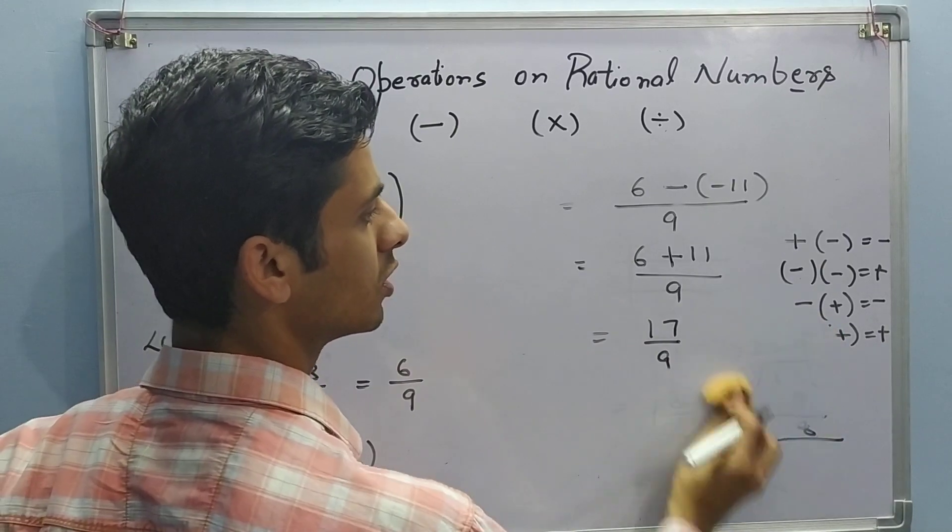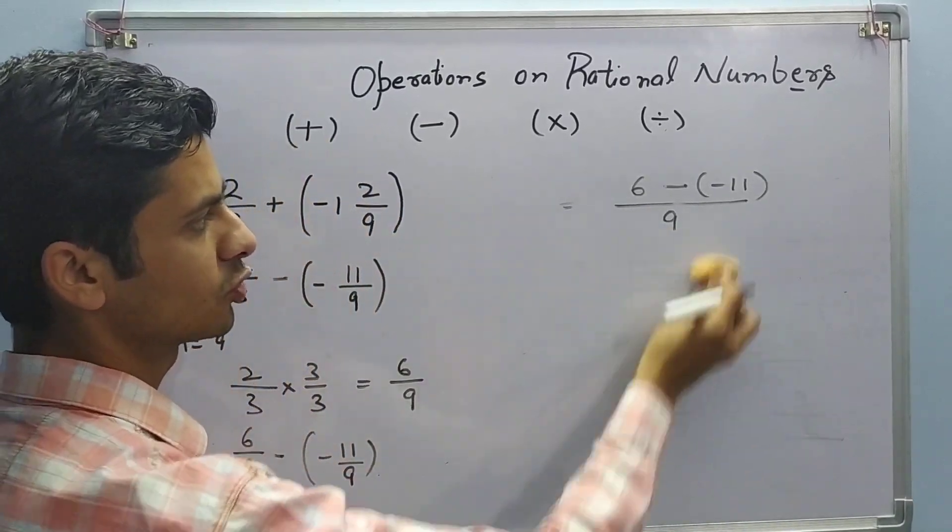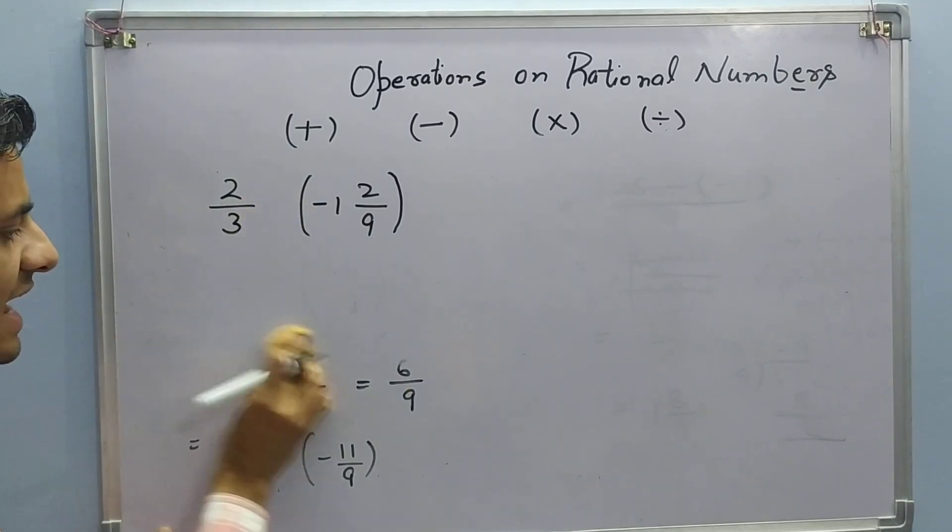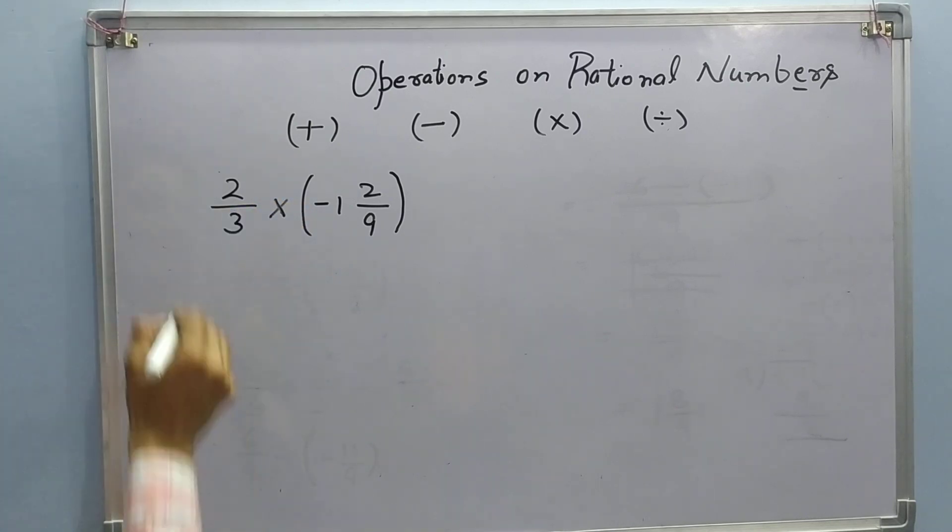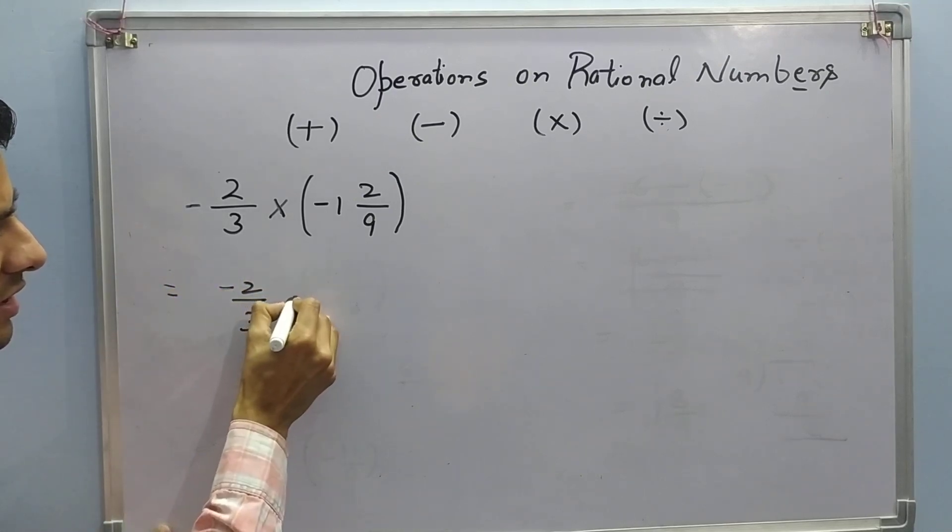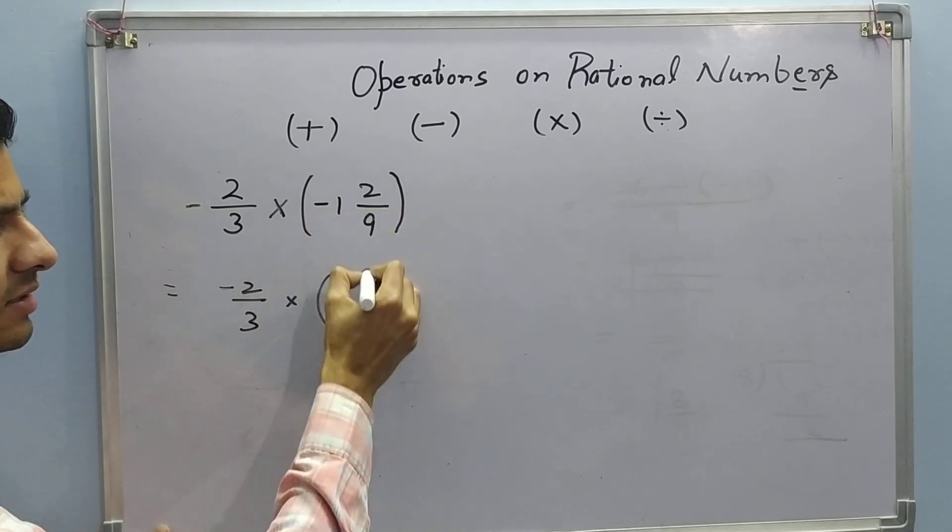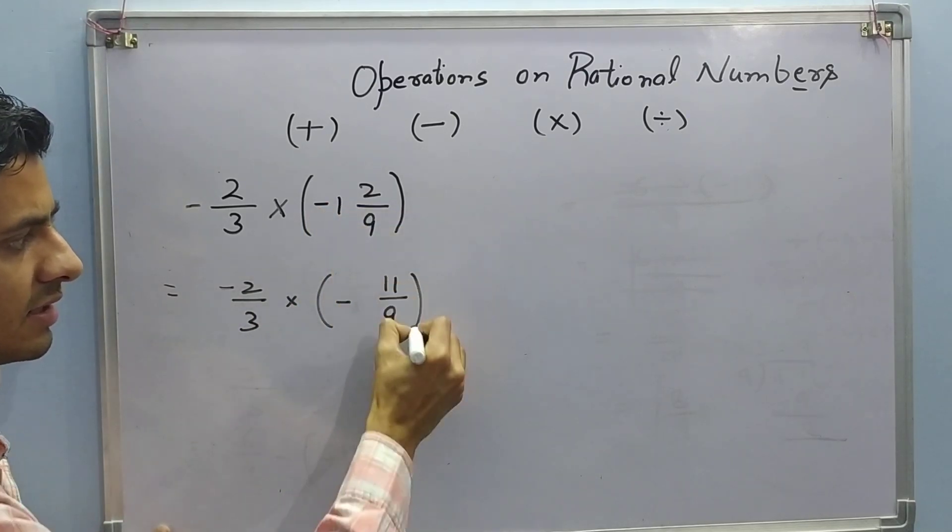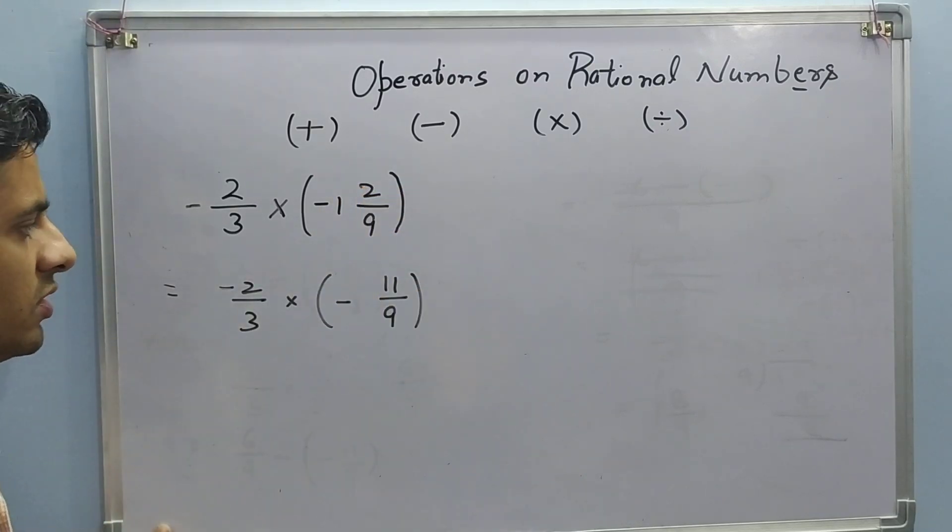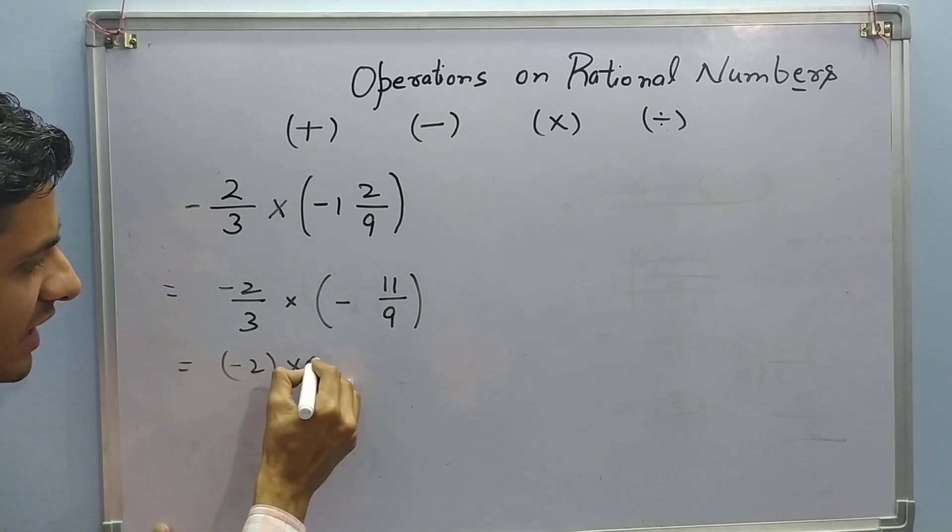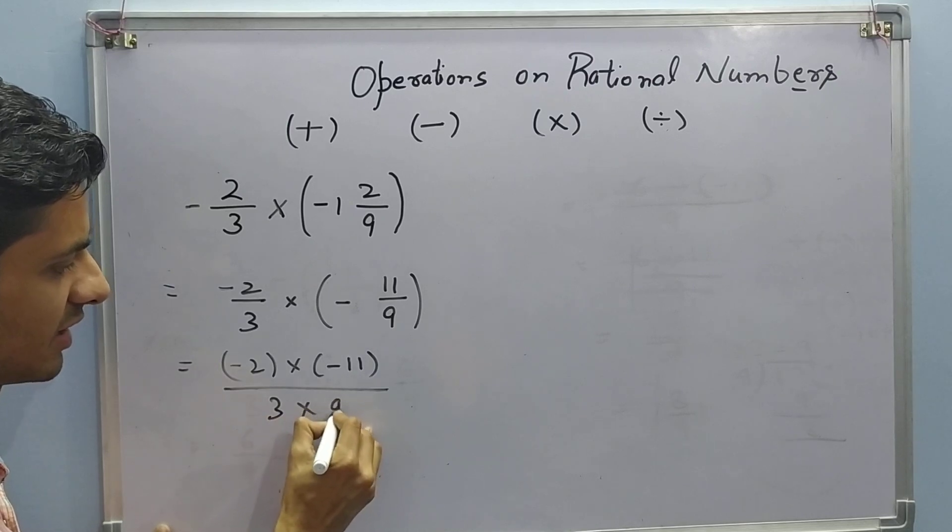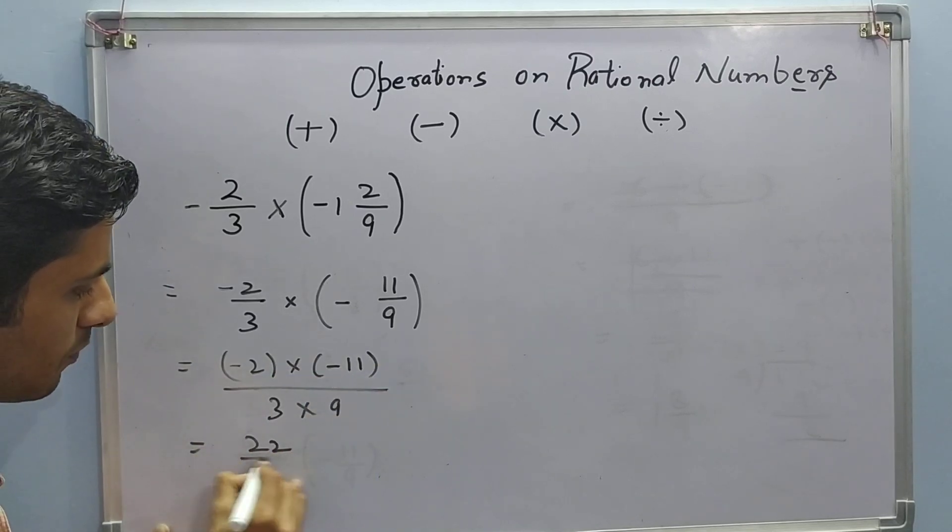Now if you want to do multiplication, how to proceed with it. Let us make this only as multiplication sign. For a little more complexity let us make this number as negative 2 upon 3. So it comes out to be negative 2 upon 3 into negative 9 ones are 9 plus 2, 11 upon 9. Converting mixed number into rational number. Negative 2 upon 3 into negative 11 upon 9. So multiplying the numerators, negative 2 into negative 11 upon 3 into 9. It comes out to be 22 upon 27.